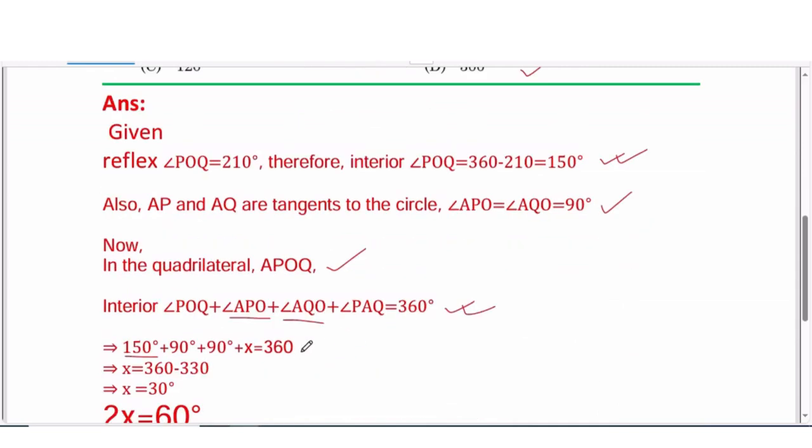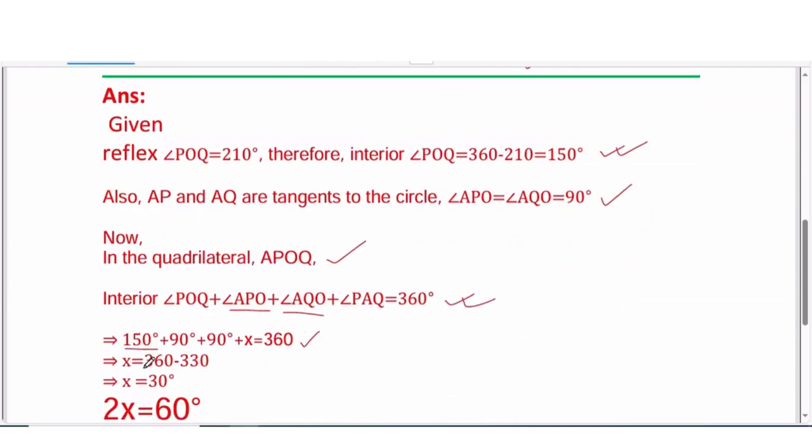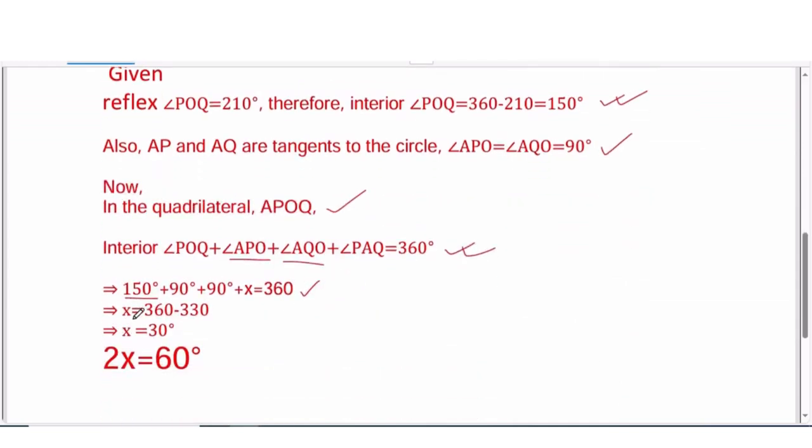So 150 plus 90 plus 90 plus x equals 360 degrees. Simplifying, x equals 360 degrees minus 330 degrees, which is equal to 30 degrees.